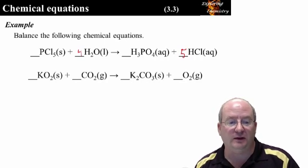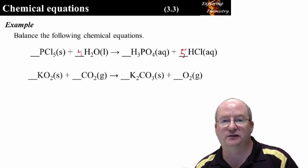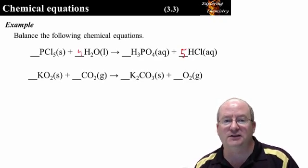We think we have it balanced. Now let's go through and do a mass and charge balance. One phosphorus, one phosphorus. Five chlorines, five chlorines. Four times two is eight hydrogens. Three plus five is eight hydrogens. Four oxygens, four oxygens. The mass is balanced. And since everything is neutral, the charge is also balanced.